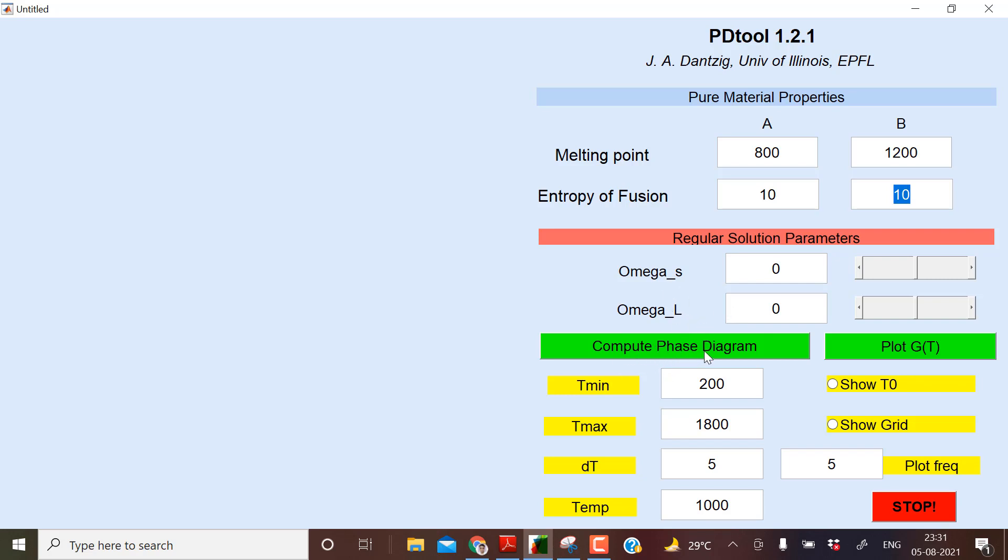Then here it is written compute phase diagram. So if you put the values, then after that we need to click this compute phase diagram. And if you want to plot this G versus T, then you need to click over here. Next thing is, suppose you want to draw the phase diagram, then what will be the minimum temperature and the maximum temperature? So this is here you can put.